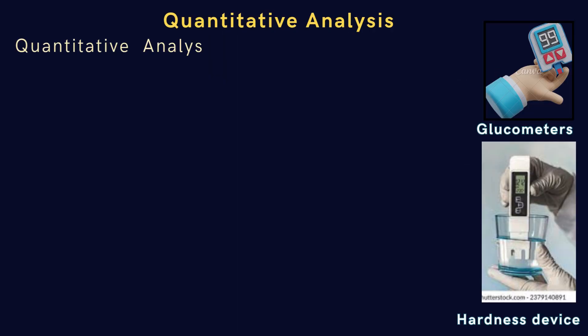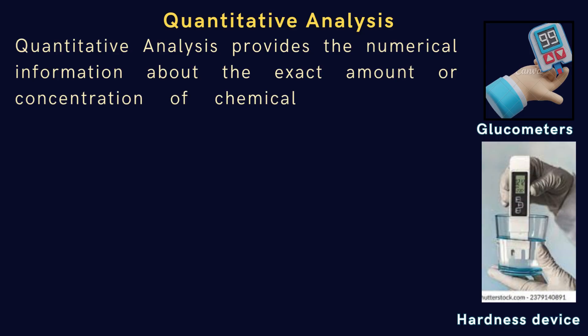Next, we will see what is quantitative analysis and how useful in chemical analysis. Quantitative analysis provides the numerical information about the exact amount or concentration of chemical substance in sample.